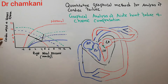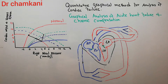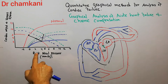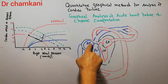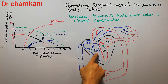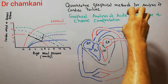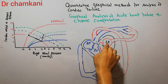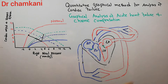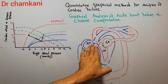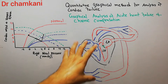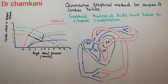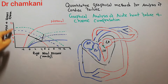In this graph, we have shown cardiac output and venous return on the Y-axis. On the X-axis, we have shown the right atrial pressure — the pressure at the right atrium, where blood from the body returns, goes into the right ventricle, then into the lungs where it gets oxygenated, and from the lungs into the left atrium, left ventricle, and out to the whole body. The amount of blood pumped by the heart every minute is cardiac output, represented on the Y-axis.